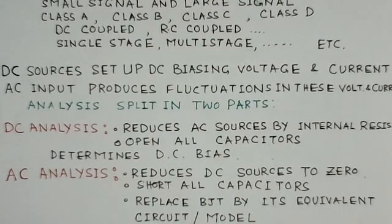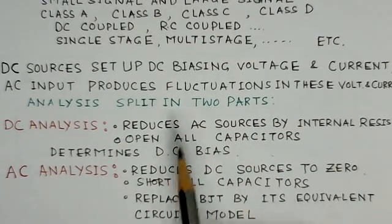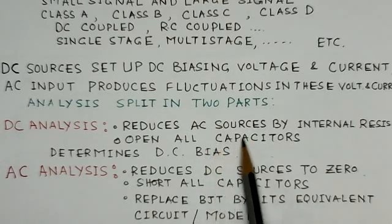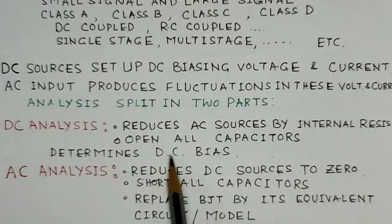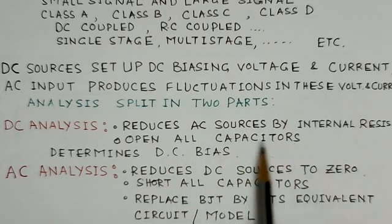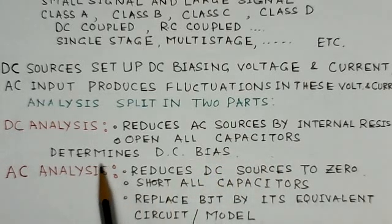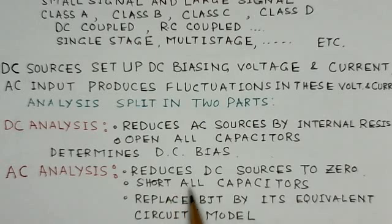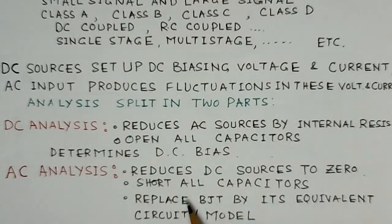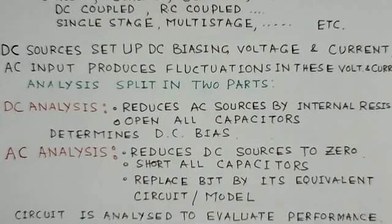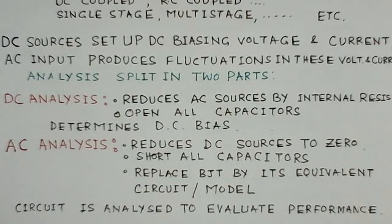The analysis of these amplifiers is divided into two parts. In DC analysis, we reduce the AC source by its internal resistance and open all capacitors, because for DC the capacitors are open circuit, and then we determine the DC bias conditions. In AC analysis, we reduce the DC sources to zero, short all capacitors (because for AC the capacitors are shorted), and replace the BJT by its equivalent circuit or suitable model to analyze the circuit and evaluate performance.